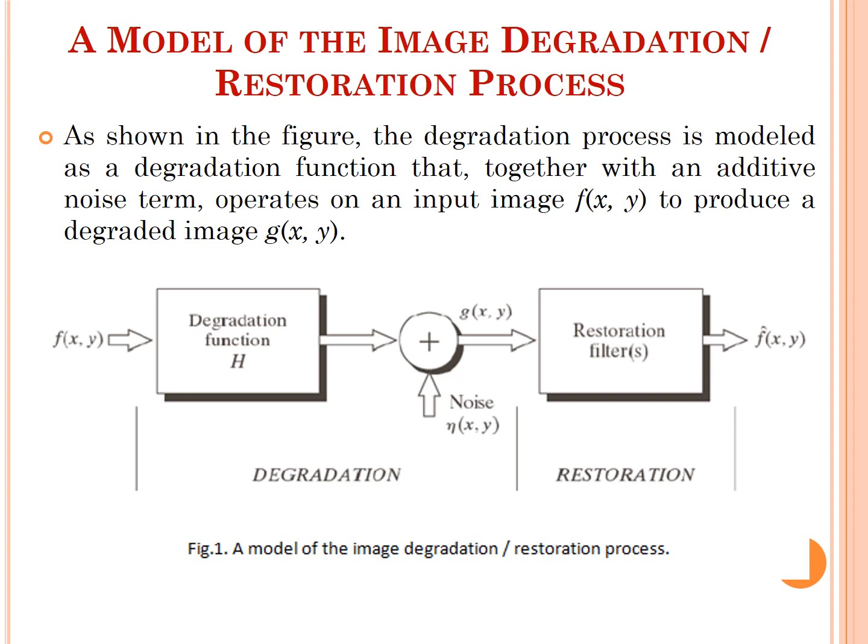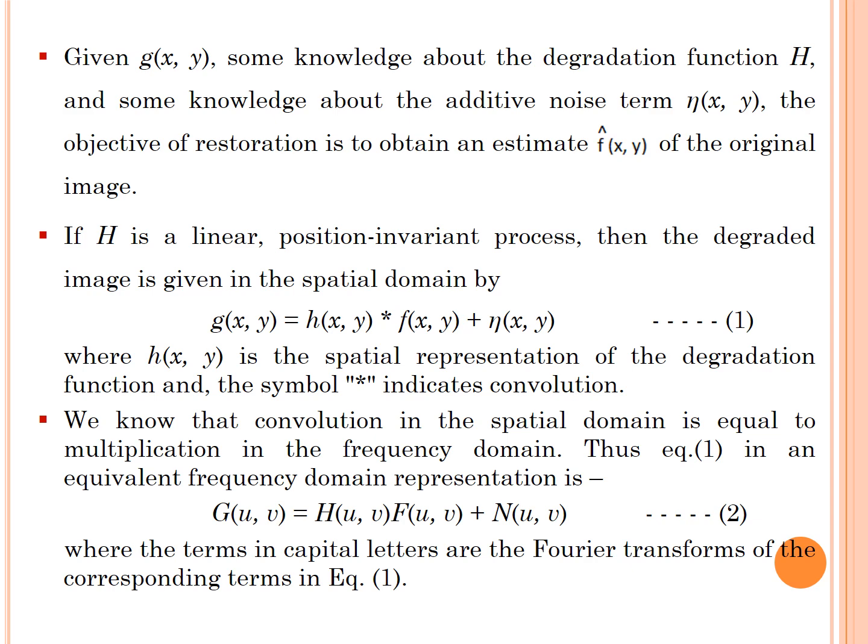Now we will see a model of the image degradation or restoration process. As shown in this figure, the degradation process is modeled as a degradation function that together with an additive noise term operates on an image f to produce a degraded image g. Given g, some knowledge about the degradation function H, and some knowledge about the additive noise eta, the objective of restoration is to obtain an estimate f-hat of the original image.